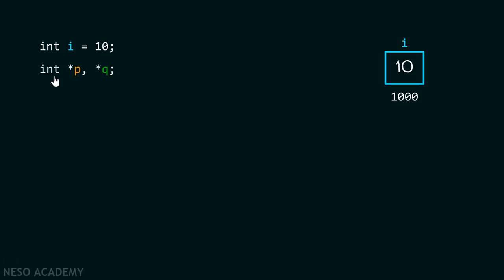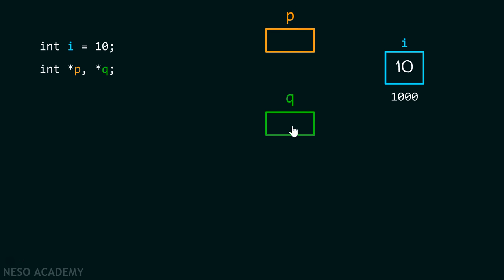Apart from this, we have these two pointers p and q, which are pointing to the object of same data type int. Here is the representation of these two pointers p and q. With the help of this statement p = &i, we are trying to assign the address of variable i to this pointer p. We can see here the address of variable i is 1000.